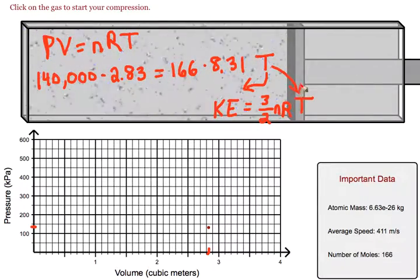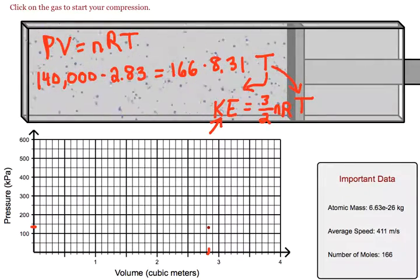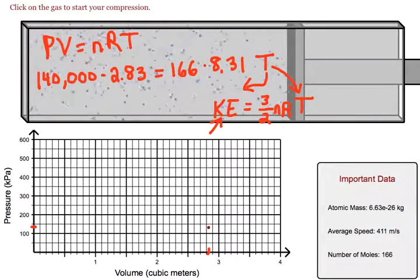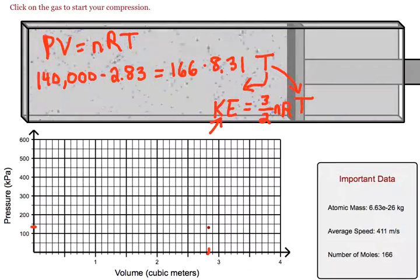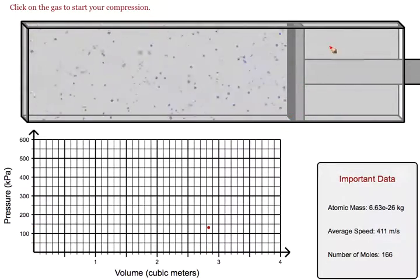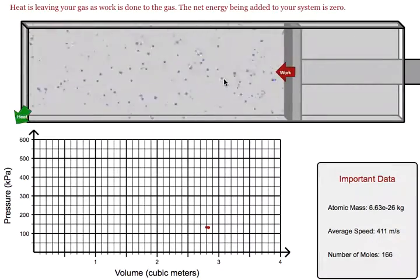So we take the temperature, plug it in here, and we get the total kinetic energy of the particles inside the box. Since our process is isothermal, the temperature won't change, which means the internal energy won't change.